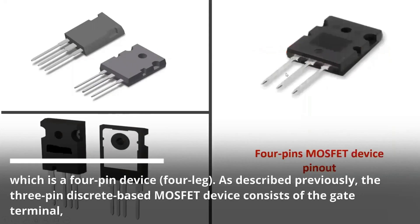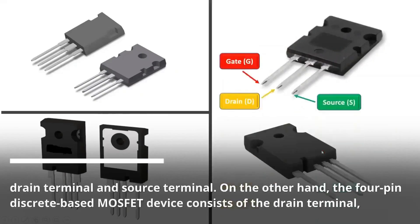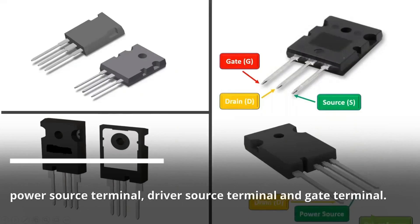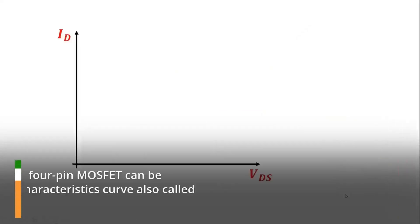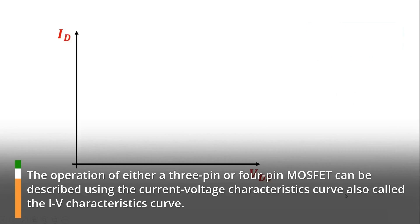The three-pin discrete-based MOSFET device consists of the gate terminal, drain terminal, and source terminal. On the other hand, the four-pin discrete-based MOSFET device consists of the drain terminal, power source terminal, driver source terminal, and gate terminal. The operation of either a three-pin or four-pin MOSFET can be described using the current-voltage characteristics curve, also called the IV characteristics curve.